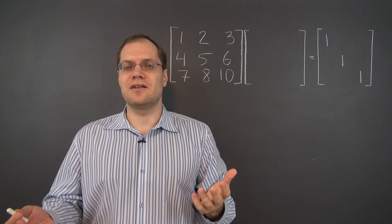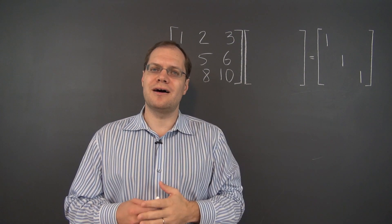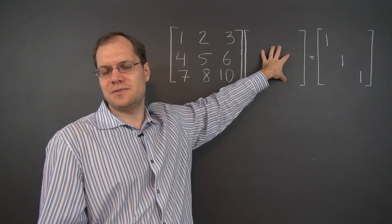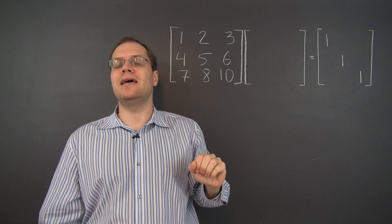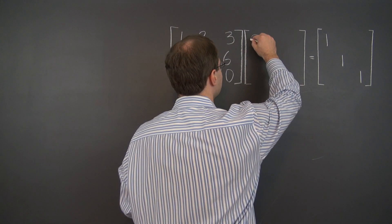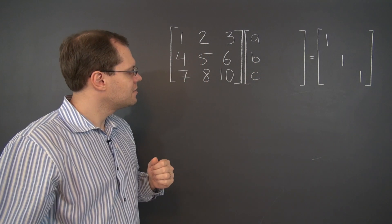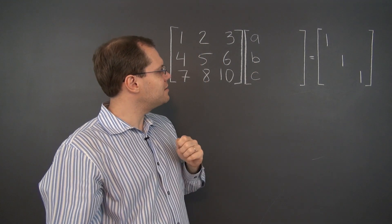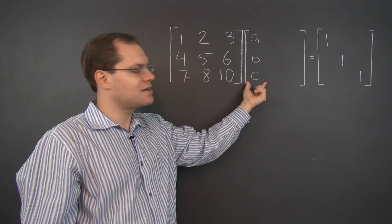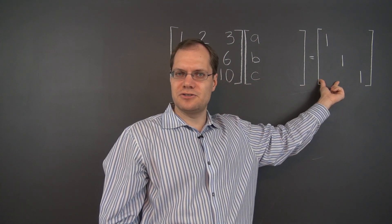Now if you didn't know the algorithm, how would you go about finding this matrix? Well, maybe you'd try to construct an equation where the unknowns are the entries of this matrix. Let's give them some names and look at the problem one column at a time. Suppose that the entries of the first column are A, B, and C. This column alone will produce the first column of the resulting matrix.